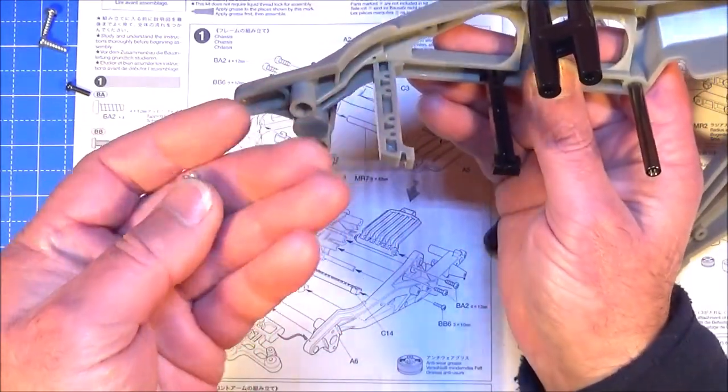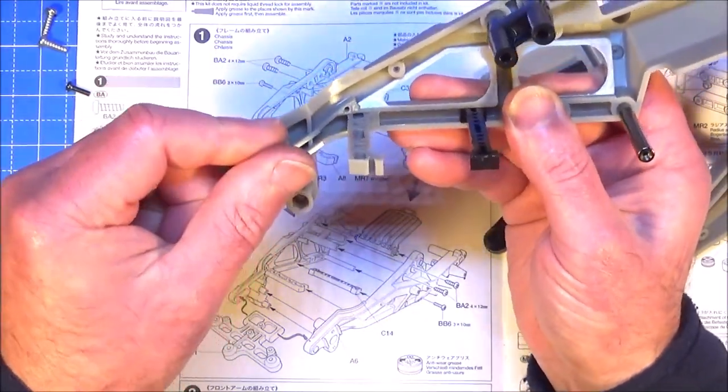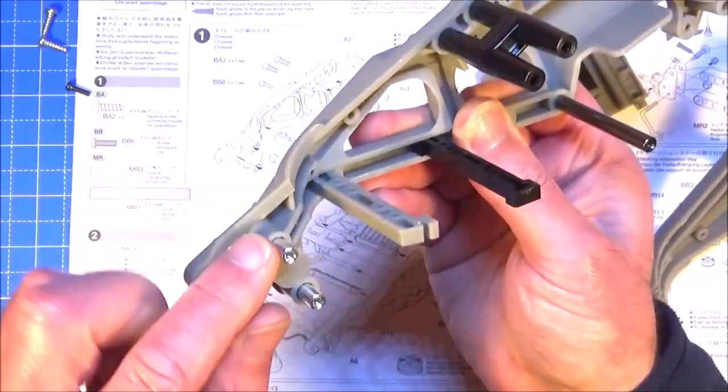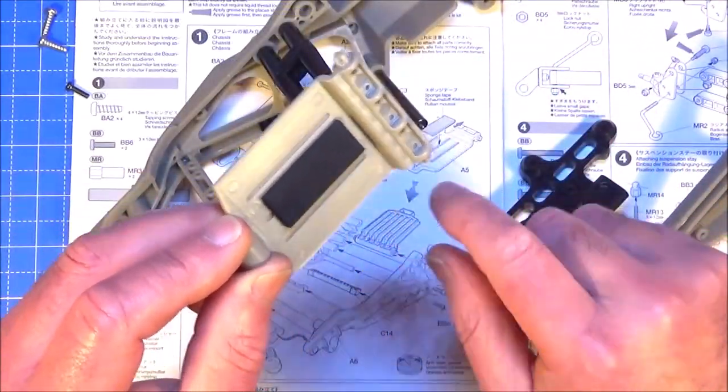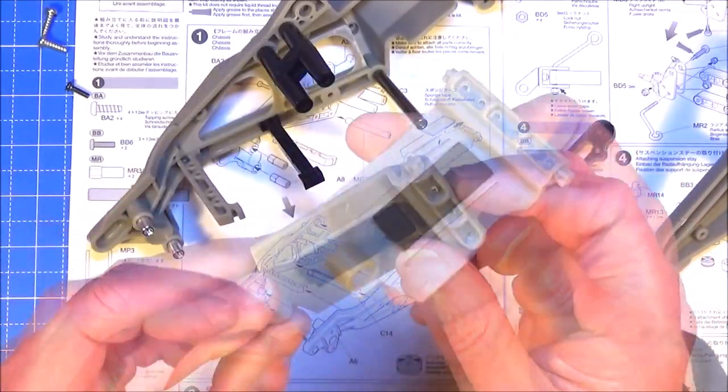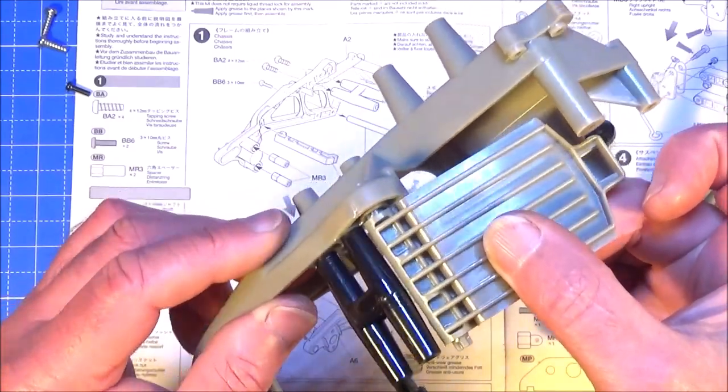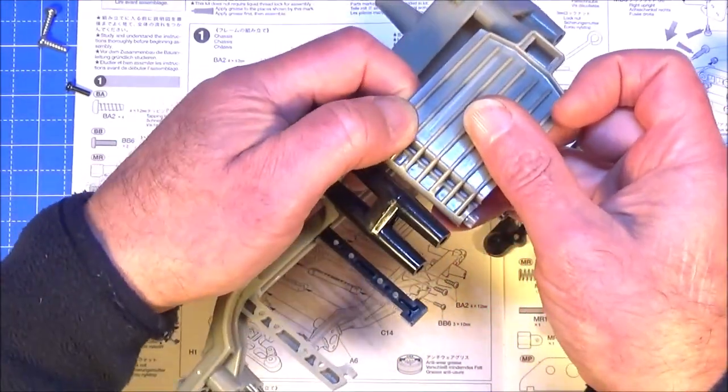Then you've got your two MR3 spacers that go into these two holes here and they are held in by the hex there. You want part A5 and you want to put this bit of sponge tape on like it shows here. That's your battery door which locates into that hole there. And then we're going to try and get the two halves together.